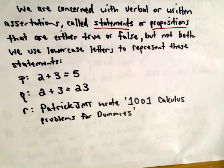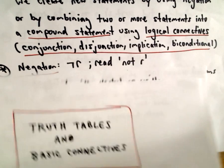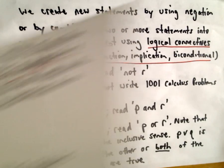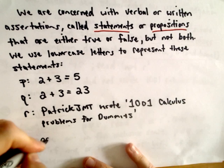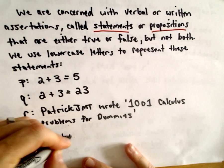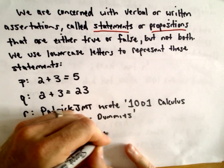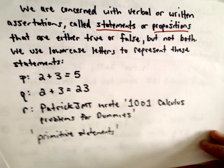We don't want to include something like 'it's beautiful outside' - that's a matter of opinion; it isn't necessarily true or false. These statements p, q, and r are what are known as primitive statements - you can't really break them down into more basic statements.